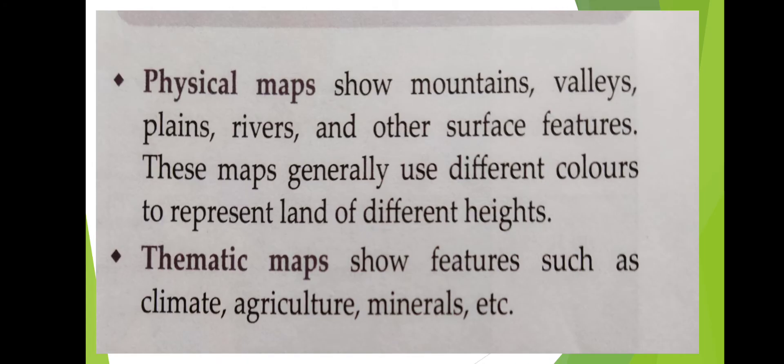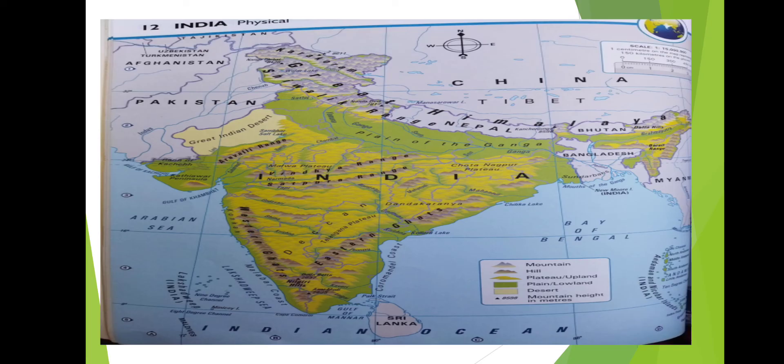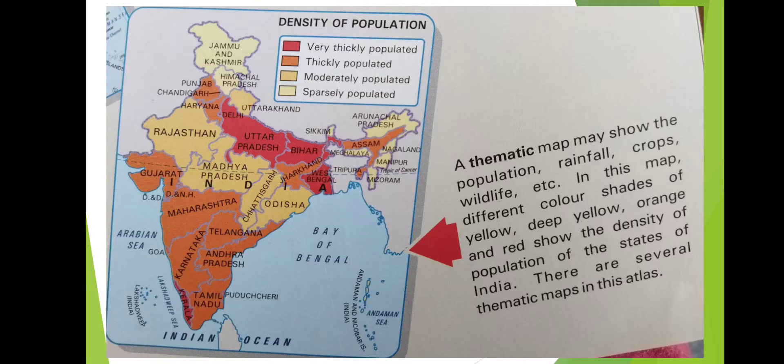The next one is physical maps. The maps that provide details about the natural features of an area or a country — like mountains, plateaus, plains, rivers, lakes and oceans and other features — are called physical maps. You can see this India physical map and find out mountains, plateaus, rivers, lakes, oceans, etc. This is called a physical map.